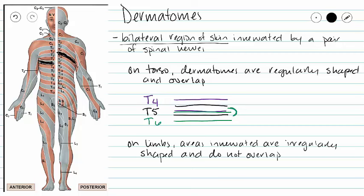On the limbs, we do not have the same pattern of innervation. If you look at your arms, this area is innervated by C7, and that is the only nerve that innervates that area of skin. There is no overlap.